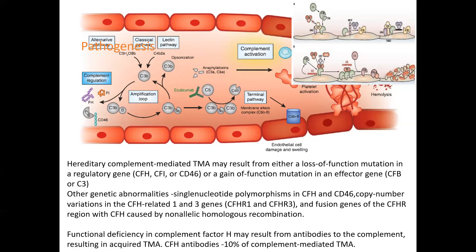Hereditary complement-mediated TMA may result from a loss-of-function mutation in regulatory genes — the most common being complement factor H, factor I, or CD46 — or gain-of-function mutations in effector genes, either complement factor B or C3. Other genetic abnormalities include single nucleotide polymorphisms in complement factor H-related proteins and CD46, copy number variation in CFH-related 1 and 3 genes, and fusion genes. Functional deficiency in complement factor H may also result from antibodies to complement, causing acquired TMA, which accounts for nearly 10% of complement-mediated TMA.